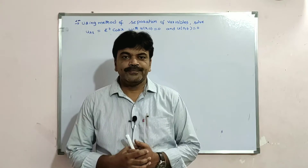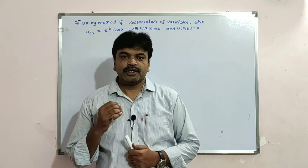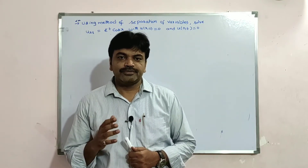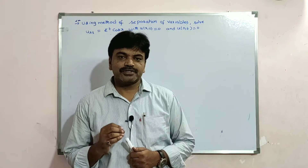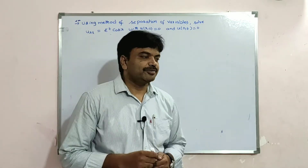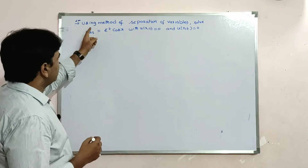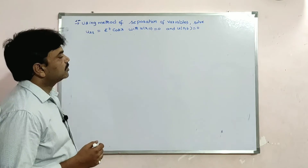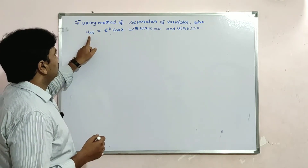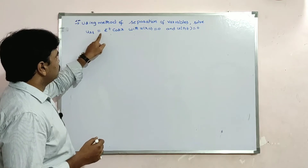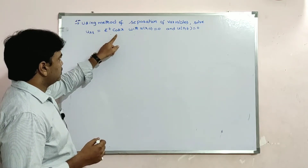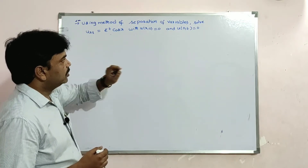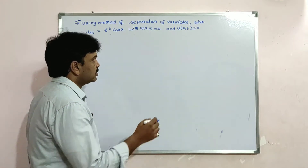Good morning students. Today I'm going to solve a problem on the method of separation of variables. The problem is: solve u_xt, that is equal to e^(-t)·cos(x), with u(x,0) equal to zero and u(0,t) equal to zero.